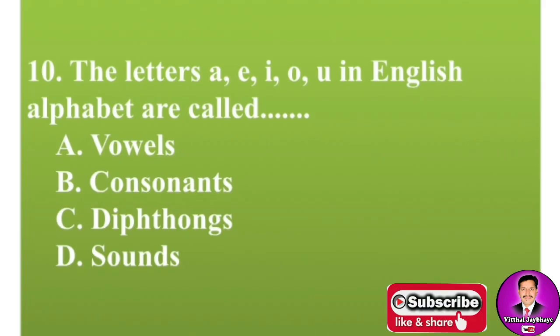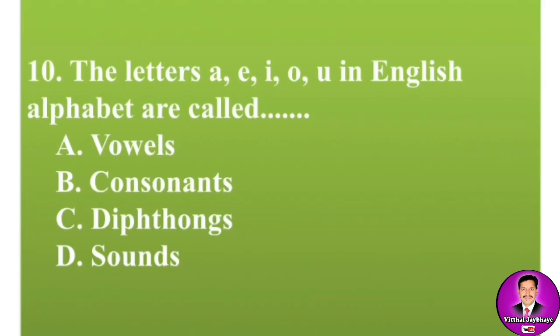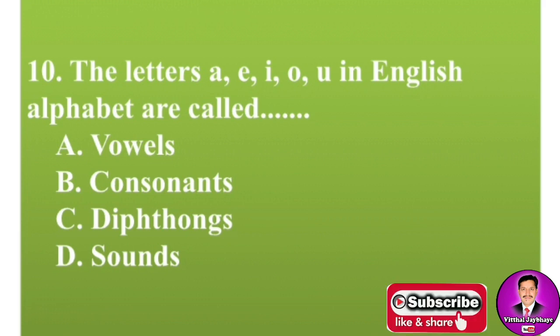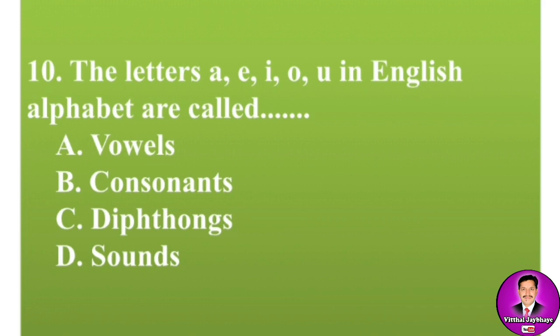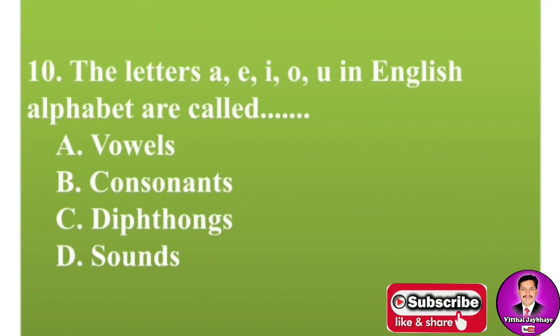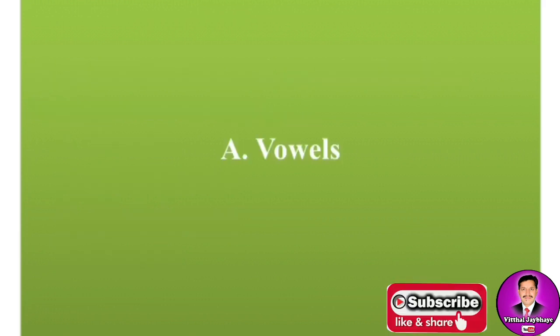Next MCQ: The letters A, E, I, O, U in the English alphabet are called — options are: A, vowels; B, consonants; C, diphthongs; D, sounds. The correct answer is A — vowels.